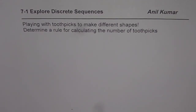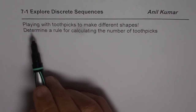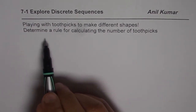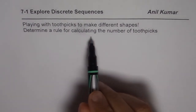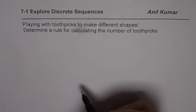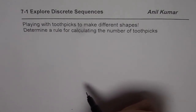I am Anil Kumar and in this video we will explore some discrete sequences. It is a very interesting chapter and we will play with toothpicks to understand it better. It is all about playing with toothpicks to make different shapes, and then the idea is to determine a rule for calculating the number of toothpicks. You can also play with some toothpicks, make some shapes and figure out how many toothpicks will be required to make the fifth shape of that kind, for example.